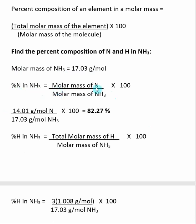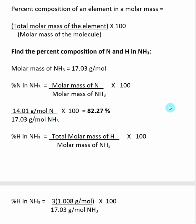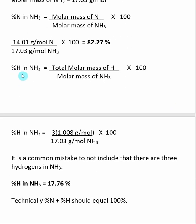I then realize that the percent nitrogen inside of NH₃ is going to be equal to the total molar mass of nitrogen inside of NH₃, divided by the molar mass of NH₃ times 100. When I look at NH₃, I realize that there's only one nitrogen inside of there, so I need the atomic weight of nitrogen, which is 14.01 grams per mole. I take that and divide by the molar mass of NH₃, which is 17.03 grams per mole. I do the division and multiply by 100, and I get 82.27%. This says that 82.27% of this molar mass, 17.03, is due to nitrogen.